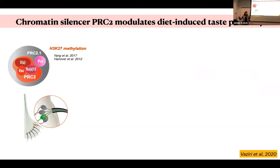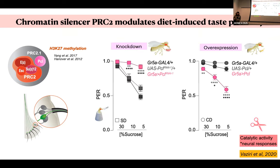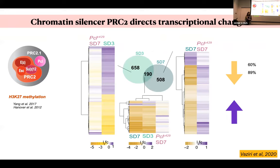What we found is that the Polycomb Repressive Complex 2, or PRC2 — a chromatin silencer conserved from plants to humans that modulates histone H3 lysine 27 methylation, one of the most important repressive marks in the genome — was required in the sweet sensory neurons. When we knocked down components of PRC2 in sweet sensory neurons on a sugar diet, we rescued the taste plasticity deficits. When we overexpressed these components on a control diet, we induced the taste plasticity. PRC2 is both necessary and sufficient for diet-dependent chemosensory alterations, and it changed taste not just at the behavioral level but also at the neural response level.